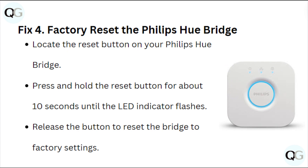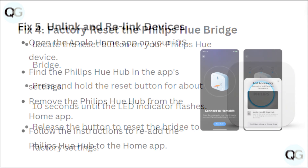4. Factory reset the Philips Hue Bridge. Locate the reset button on your Philips Hue Bridge. Press and hold the reset button for about 10 seconds until the LED indicator flashes. Release the button to reset the bridge to factory settings.